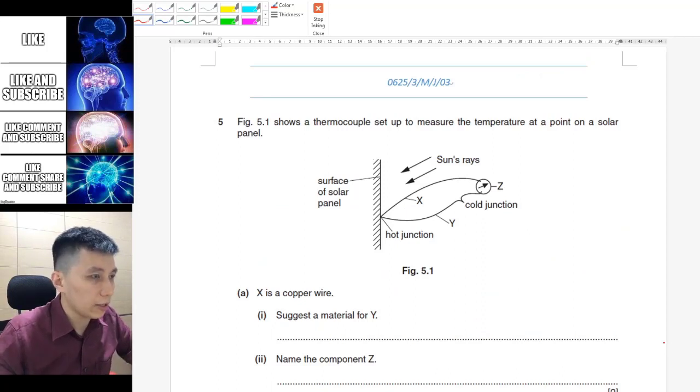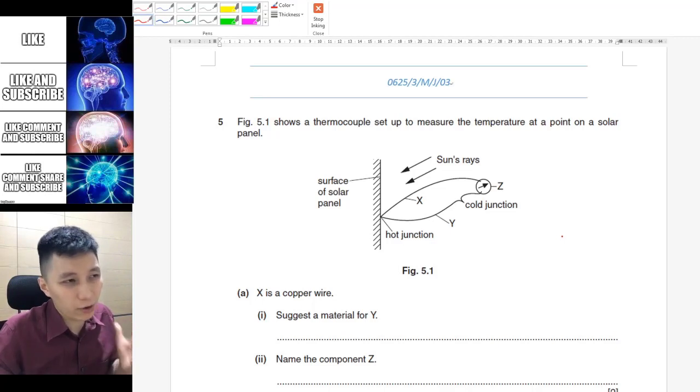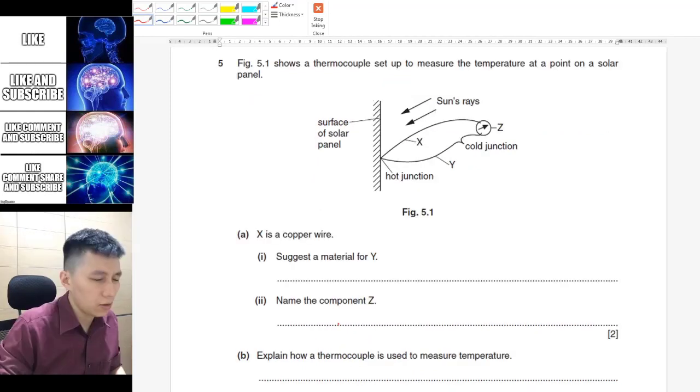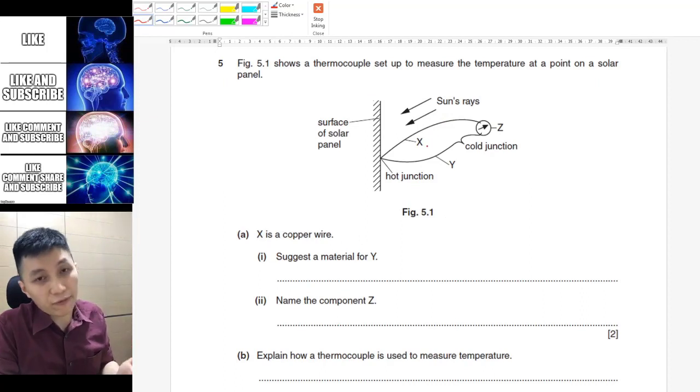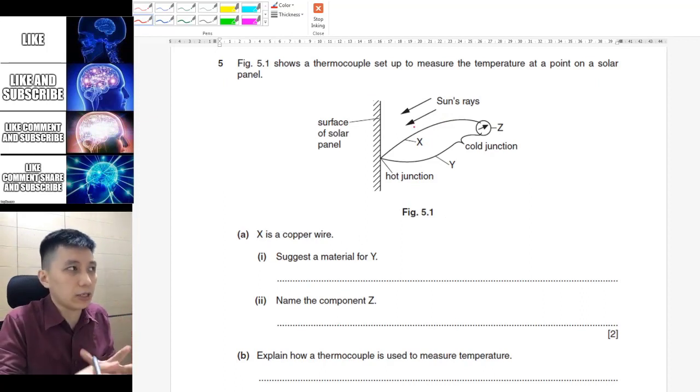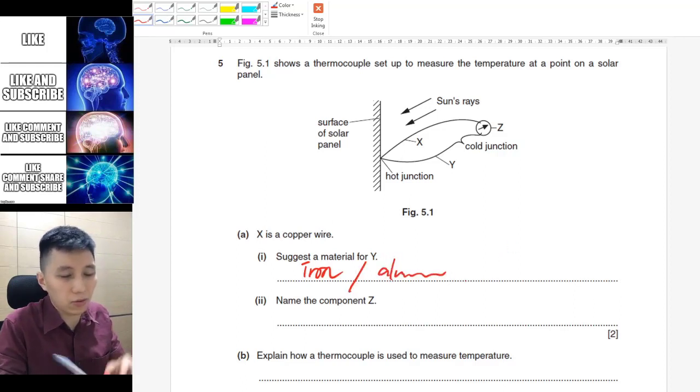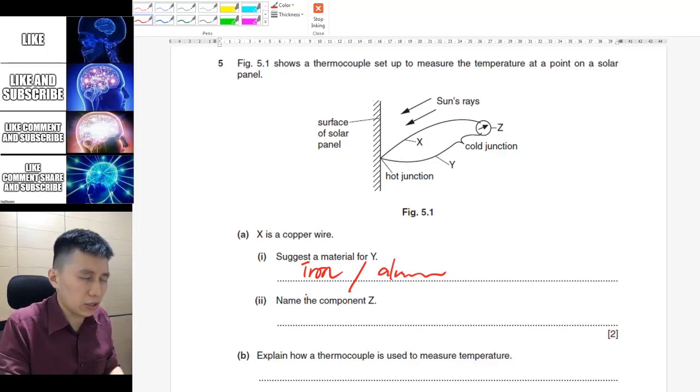Next one, here we've got a solar panel and also a thermocouple. So again, rarely you see this in an example, and therefore I'll try to find an example for you. Here X is a copper wire. If you remember, we need to have another metal. It must be metal, it cannot be plastic or glass. So for Y, you would need to suggest another metal like iron or aluminum, or anything you can think of. As long as it's not copper, then that's fine. For Z, if you remember, the component is called galvanometer.